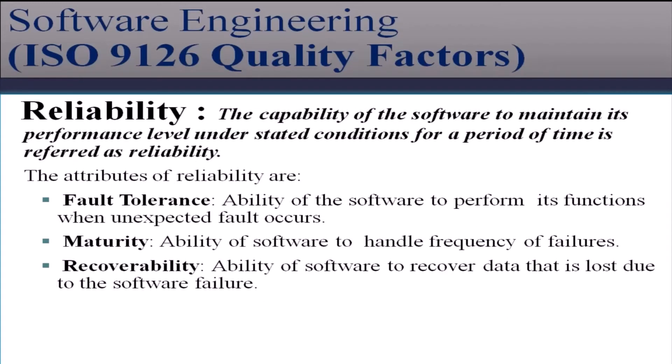The second factor is reliability. The capability of the software to maintain its performance level under stated conditions for a period of time is referred to as reliability. The attributes of reliability are fault tolerance, maturity, and recoverability. Fault tolerance means ability of the software to perform its functions when an unexpected fault occurs. Maturity is the ability of the software to handle the frequency of failures. Recoverability is the ability of the software to recover data lost due to software failure.